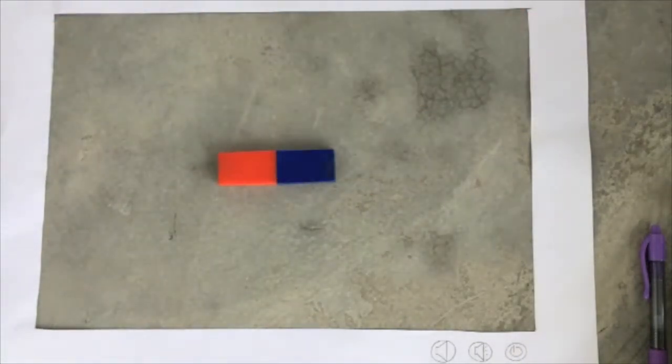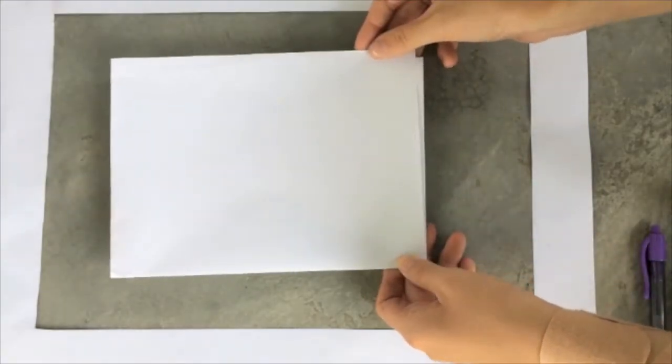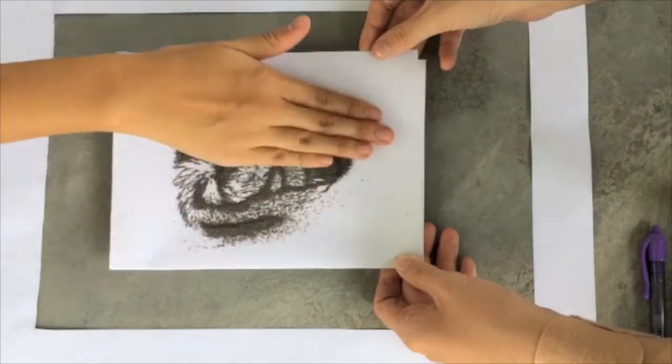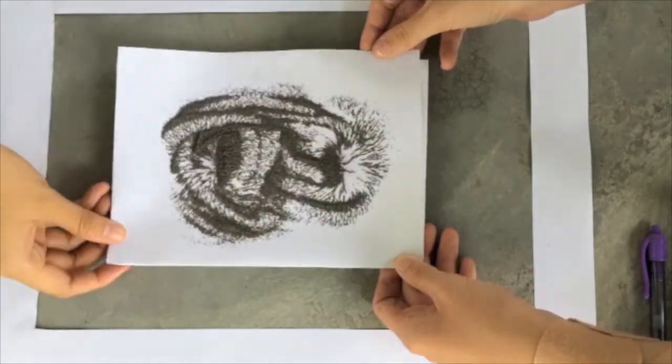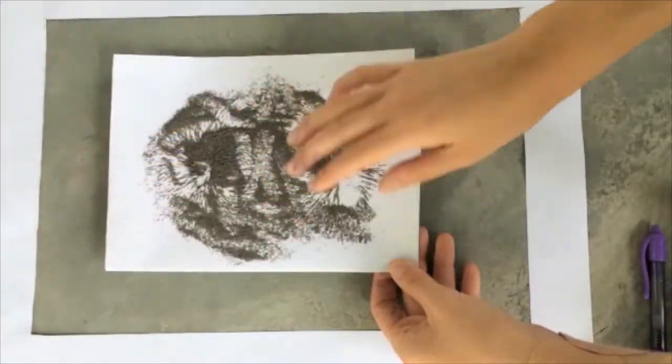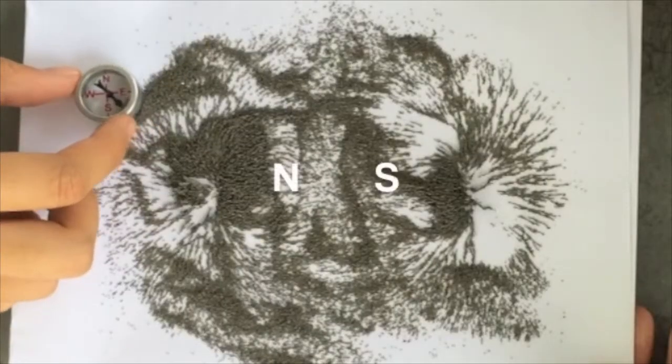You place a piece of paper on top of a bar magnet and sprinkle iron filings on top. You will notice that the iron filings will arrange themselves into distinct lines. This is a result of the North and South Poles and can be determined using a compass.